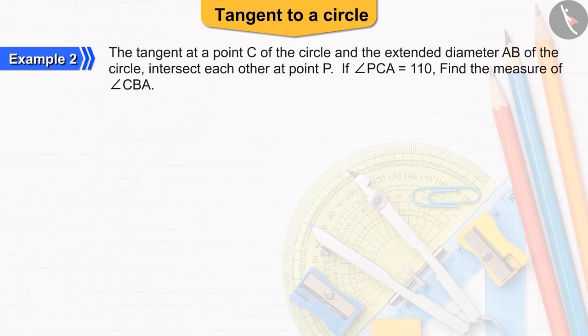Let us have a look at another example. The tangent at a point C of the circle and the extended diameter AB of the circle intersect each other at point P. If the measure of angle PCA is 110 degrees, find the measure of angle CBA. Pause the video to solve the question and then match your answer.